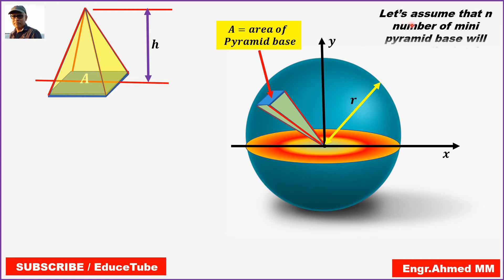So let's assume that n number of mini pyramids, because I have taken here only one pyramid, but there will be lots of pyramids. And summing all those pyramid base areas will give us the total surface area of the sphere. That is, I have written here n number of mini pyramid base will cover the total surface area of the sphere.